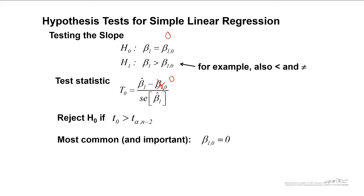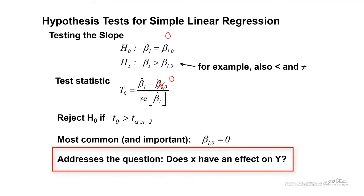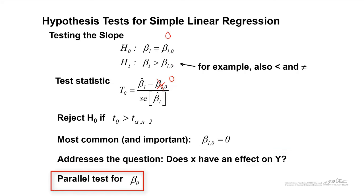Again the most common and important null hypothesis would be that the slope is equal to zero. This addresses the question if we use the null hypothesis equal to zero: does x have an effect on y? And there are parallel tests for beta_naught.